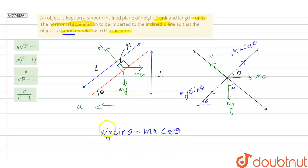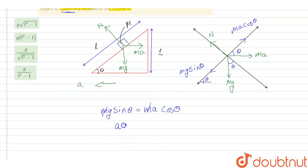Therefore I can write a will be equal to g sine theta upon cos theta. That means a is equal to g tan theta.